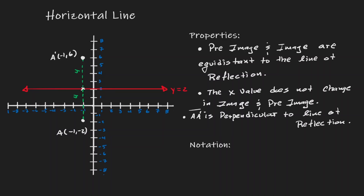Let's choose another random point and reflect it over the same line. Let's find the distance from this point to the line of reflection — that will be 6 units. Therefore, the image should be located 6 units away from this line on the other side. So now we have our coordinate point for the image of B, which will be (3, 8).